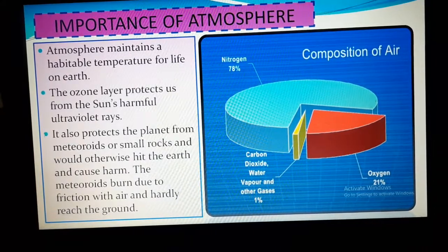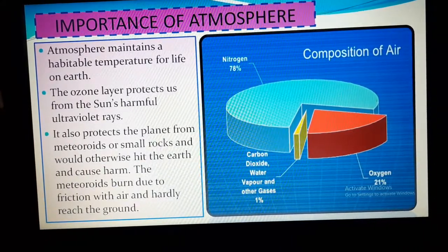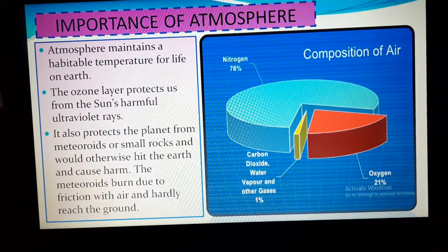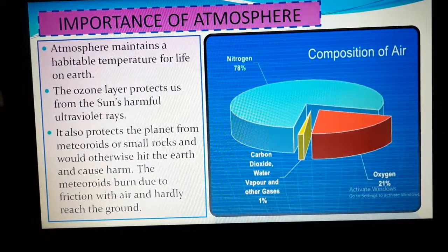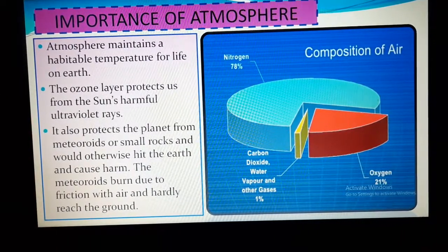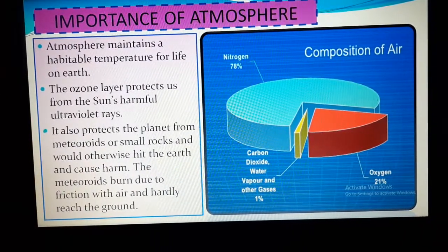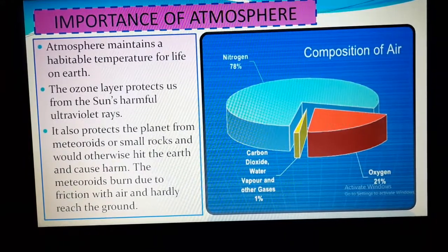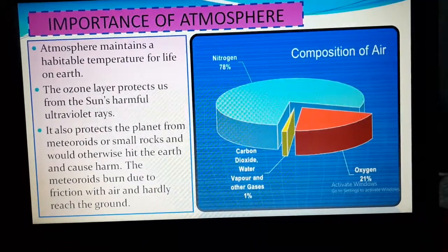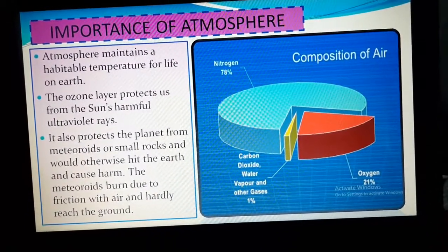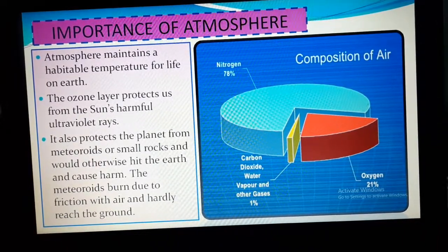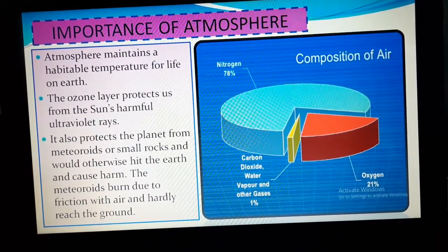What are these meteoroids? Meteoroids are small rocks which are moving around in space. Sometimes these meteoroids come closer to the earth and can fall on it. When they fall on the earth, they will cause harm. These meteoroids are prevented from falling on the earth due to the presence of the atmosphere.